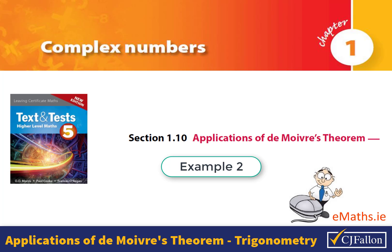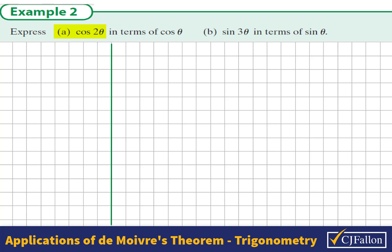Applications of De Moivre's Theorem, Example 2. We are asked to express cos2θ in terms of cosθ. Let us consider first the expansion of (cosθ + i sinθ) to the power of 2.